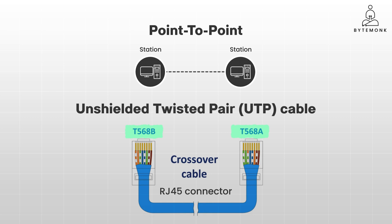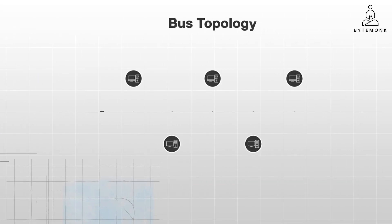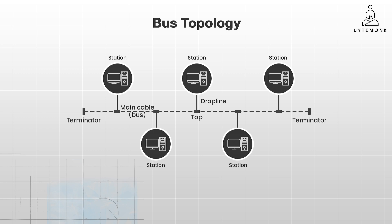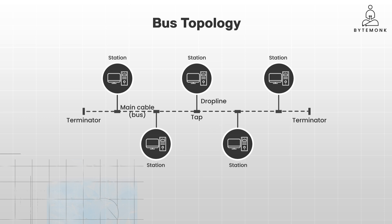Now, let's shift gears and see what happens when we bring multiple devices together on a single shared line. In a bus topology, all devices are connected to a single cable known as the backbone or bus. This backbone acts as a shared communication medium and data travels along it in both directions. When a device wants to send data, it broadcasts it onto the bus, and all other devices on the network receive the signal. However, only the intended recipient, whose address matches the one in the data packet, processes the information.